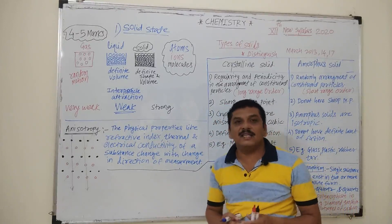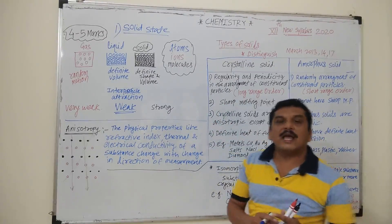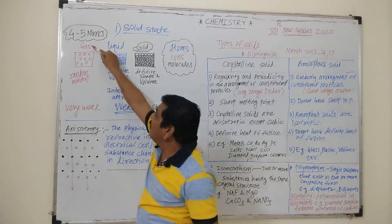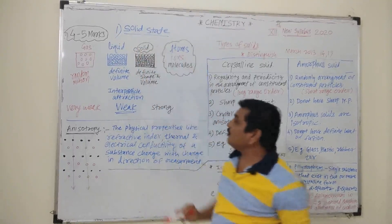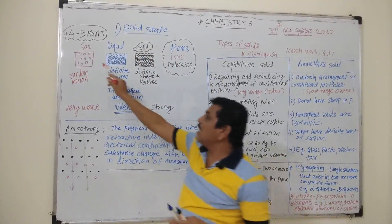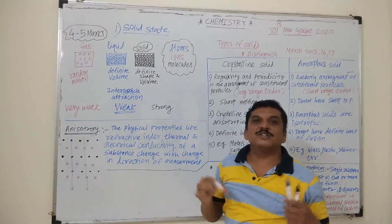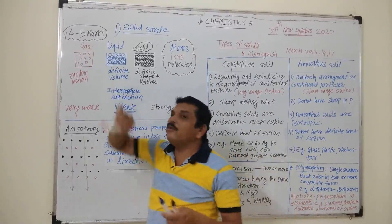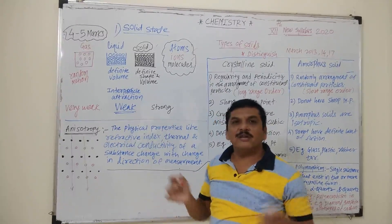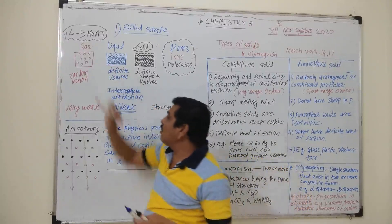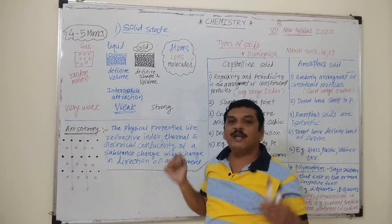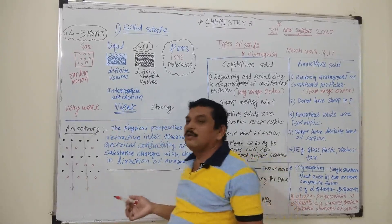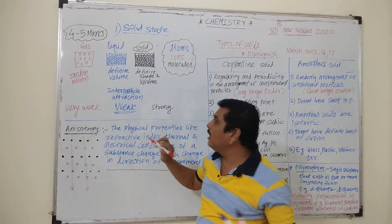Before that, what is matter? Matter is anything that occupies space and has mass. There are 3 states of matter: gaseous state, liquid state, and solid state. In the gaseous state, atoms, ions, or molecules are the constituent particles. These are far away from each other and there is a very weak force of attraction between them. They have random motion and are free to move from one place to another, hence they do not have definite volume or definite shape.